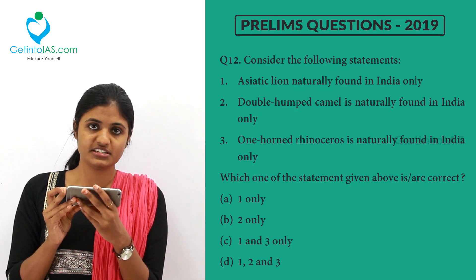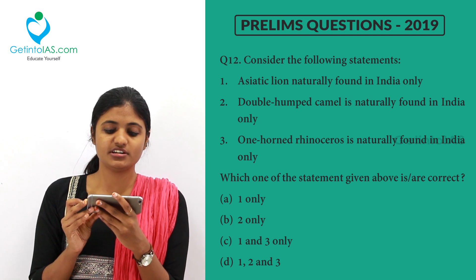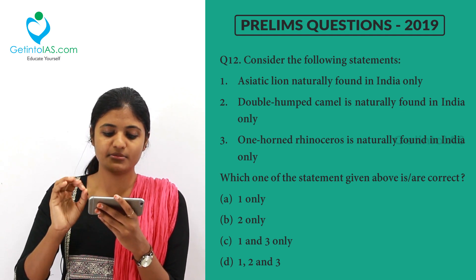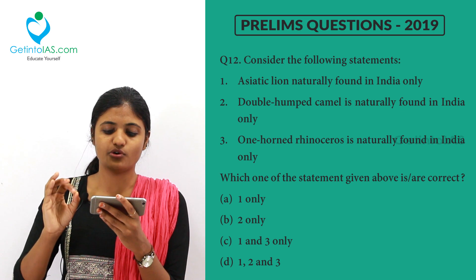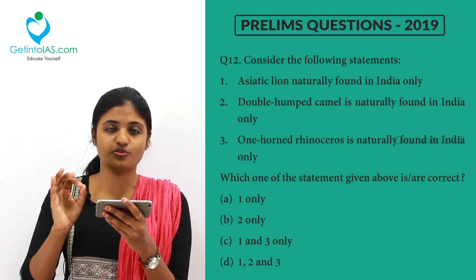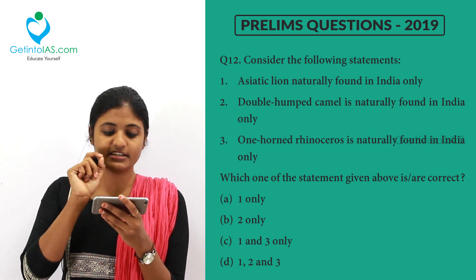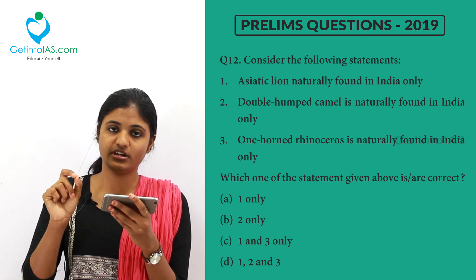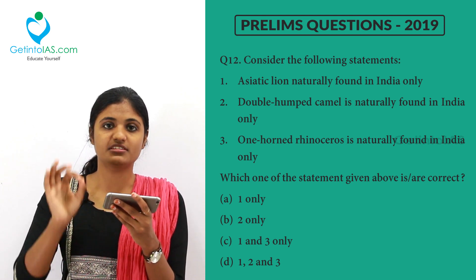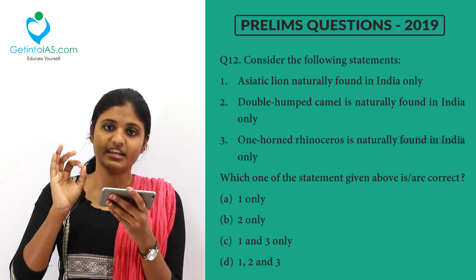Next question — consider the following statements. First: Asiatic lion is naturally found in India only. Second: double-humped camel is naturally found in India only. Third: one-horned rhinoceros is naturally found in India only. The Asiatic lion is very famous in the Gir forest of Gujarat — so it is found in India only. That statement is correct.